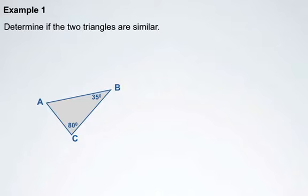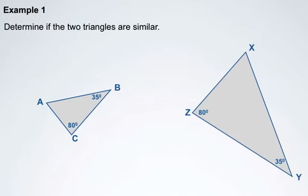So we've got triangle ABC and triangle XYZ. In each of the triangles, there are two angle measurements that are identified. In triangle ABC, we've got an angle measurement of 80 degrees and another one of 35. And in triangle XYZ, we've got an angle measurement of 80 and an angle measurement of 35.